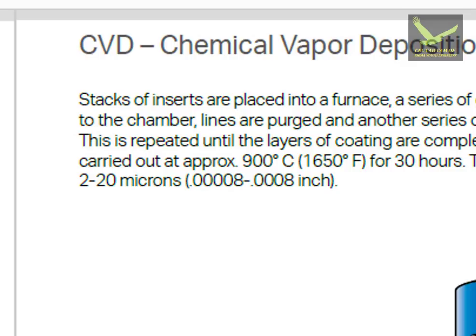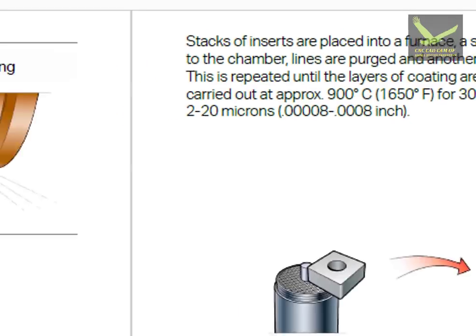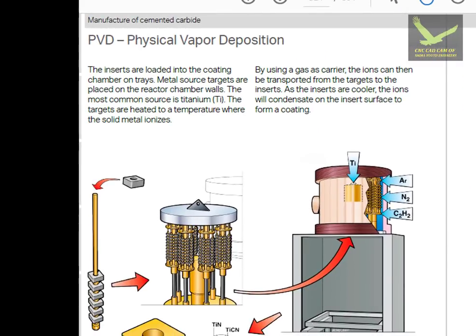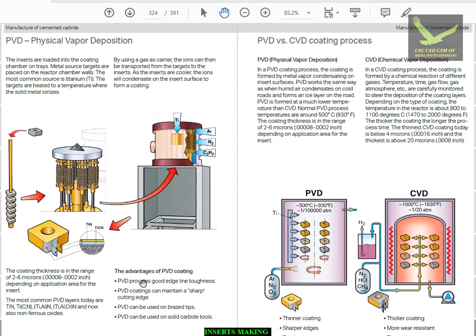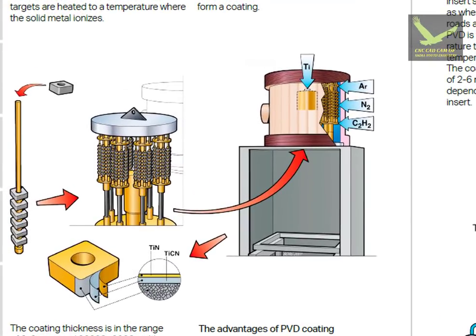This thick layer sticks onto inserts through the CVD process. Now let's talk about Physical Vapor Deposition. In PVD, inserts are placed inside a metal reactor chamber. The inserts are loaded onto a tray and placed inside the chamber, and the metal whose layer we want to develop on the inserts is placed in an ionization chamber.